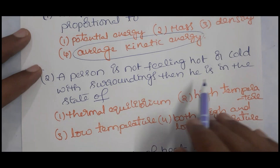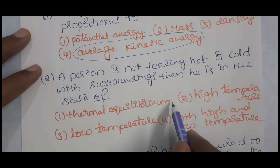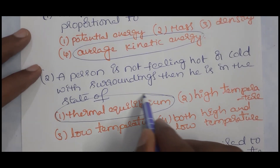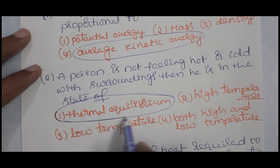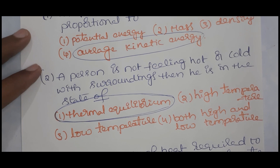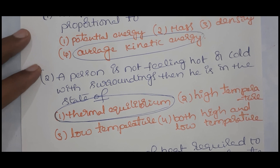A person not feeling hot or cold with surroundings is said to be in the state of thermal equilibrium. When bodies are in thermal equilibrium, there is no transfer of heat from one body to another because all bodies have the same temperature. That is why our body does not lose or gain heat energy, so we feel neither hot nor cold.